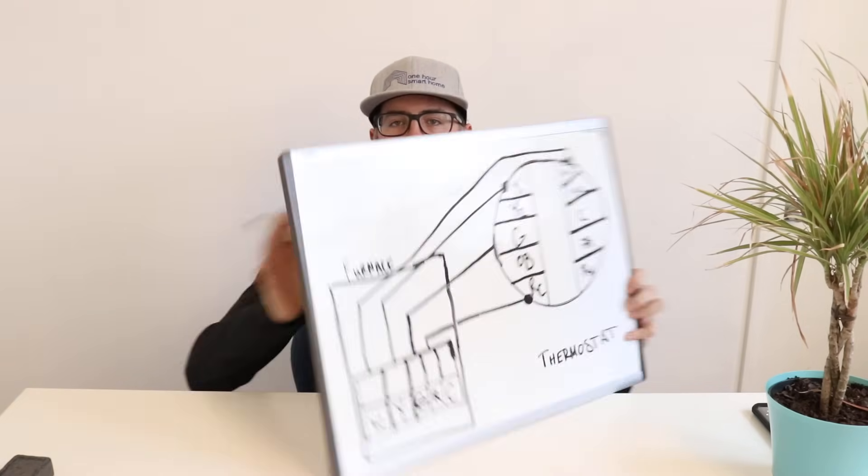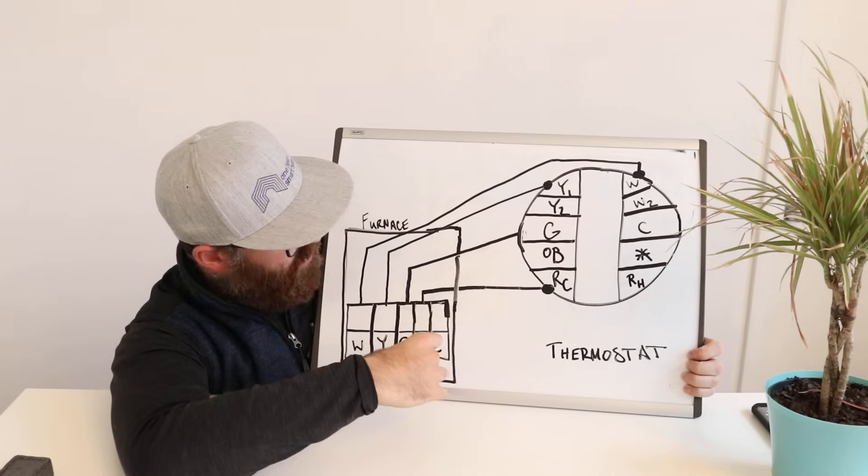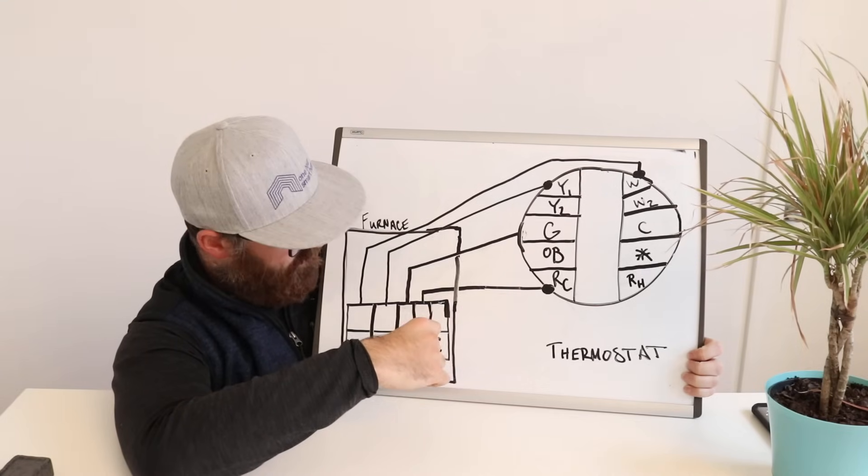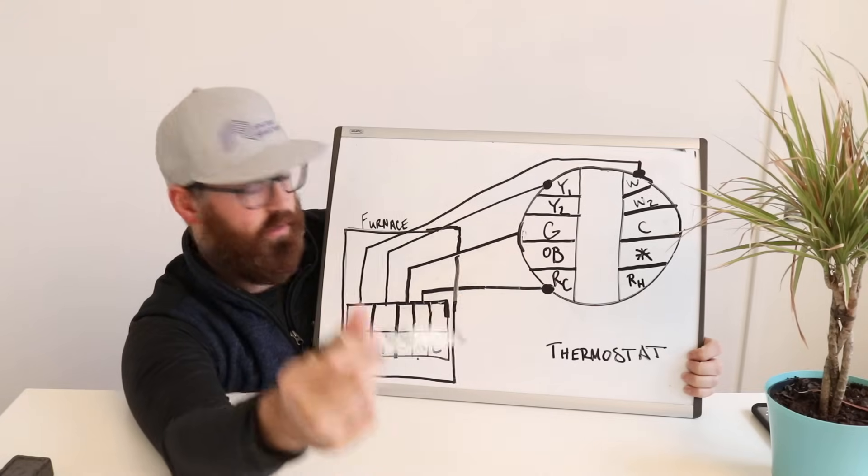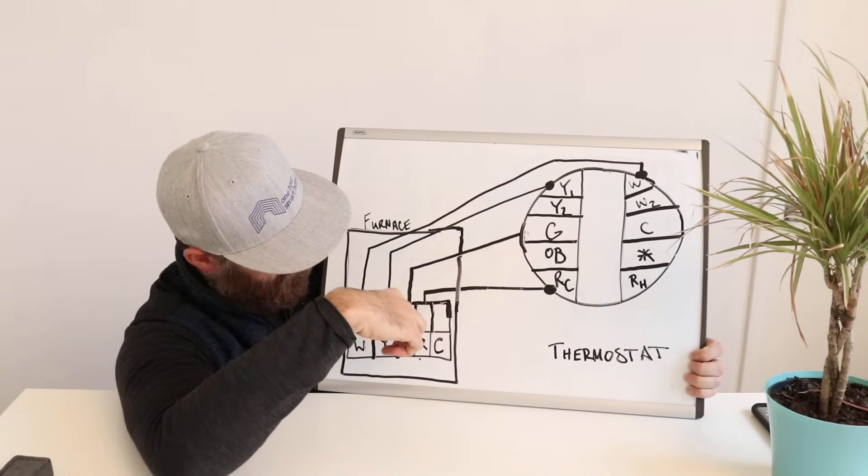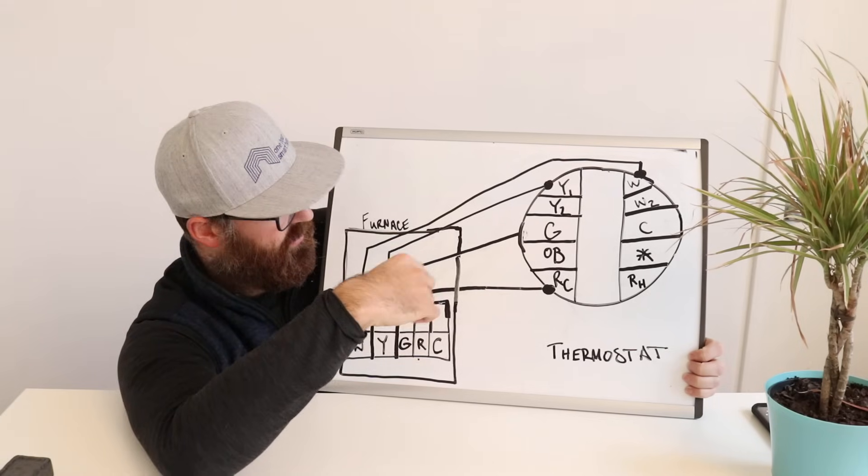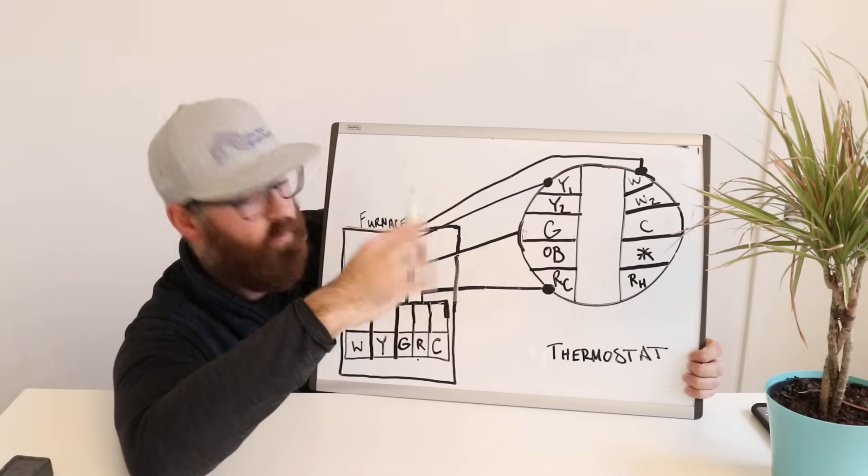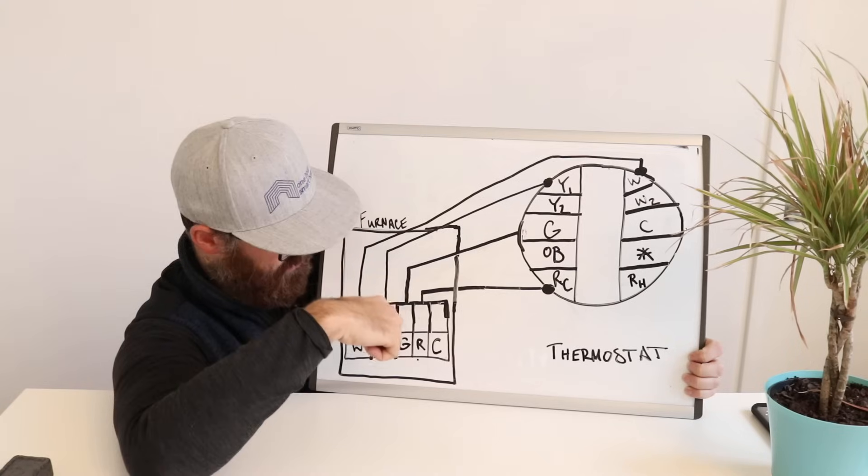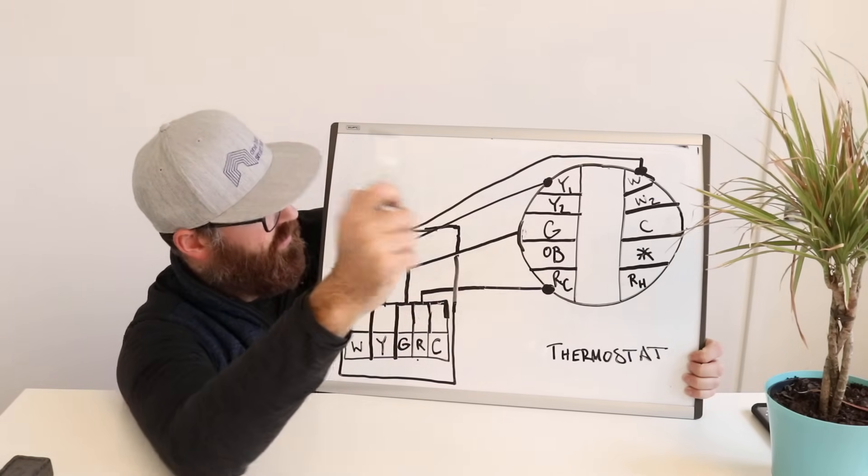Typical wiring is going to be something like this. You're going to have your R-wire, which is the power wire from the furnace, going from R in the furnace to RC on your Nest thermostat. You're going to have your G-wire, which is your fan wire, going from the G in the furnace to the G on the thermostat. You're going to have a Y-wire, which is your cooling, air conditioning, going from Y in the furnace to Y on your thermostat.